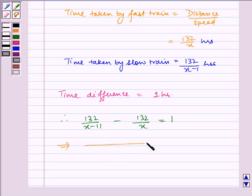Now, solving this and taking LCM, we get 132 times x minus 132 times x minus 11, whole divided by x into x minus 11, is equal to 1.